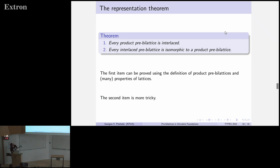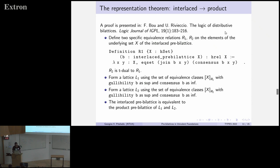And the second part says that every interlaced pre-bi-lattice is isomorphic to a product pre-bi-lattice. This one is a bit more tricky. There is a mathematical proof, of course, for example, in this paper.